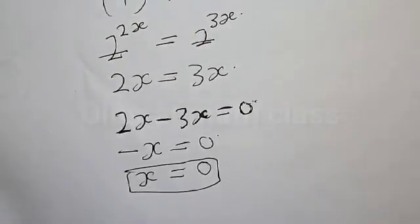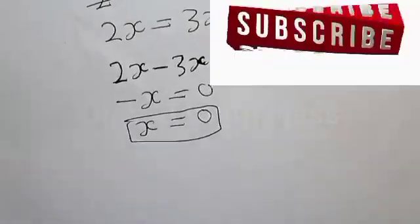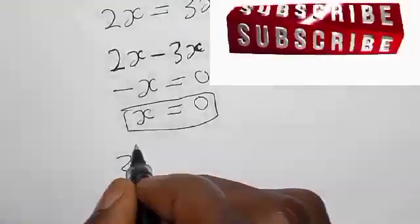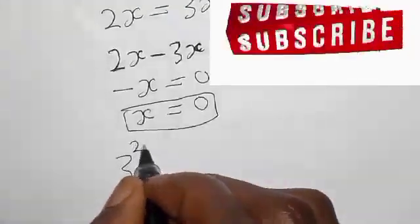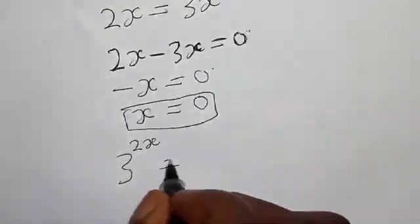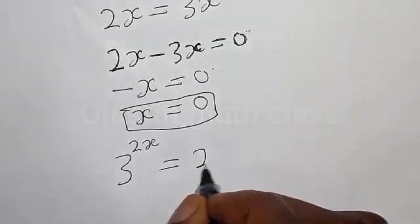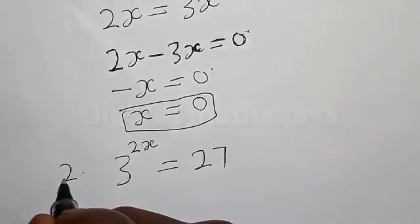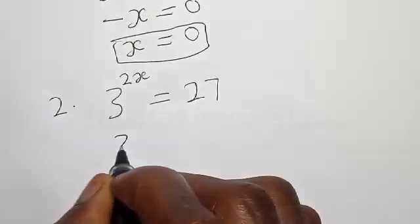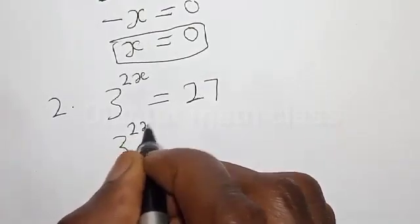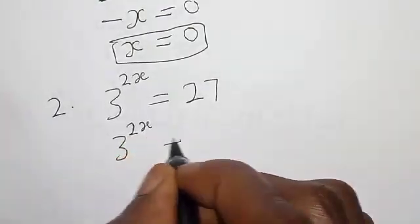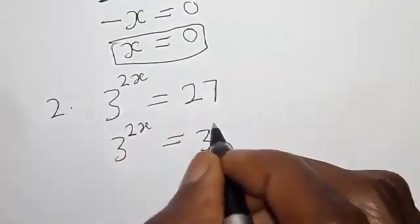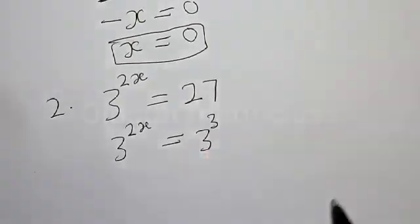Then for the second question we have: 3 raised to power 2s is equal to 27. This is question number 2. Now, 27 can be expressed as 3 raised to power 3.